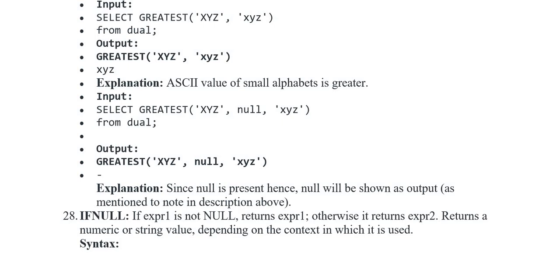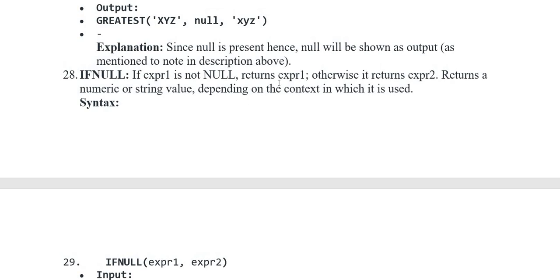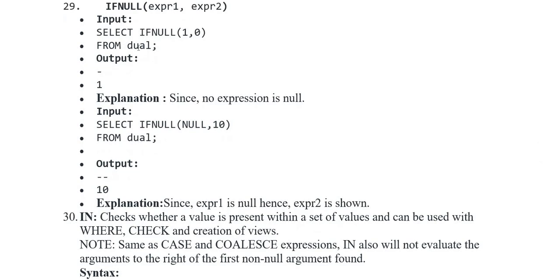Iskeba aata hai IFNULL. If expression is not null, return expression one; otherwise it returns expression two - returns a numeric or string value depend on the context in which it is used. Syntax: IFNULL(expression_one, expression_two). Input: SELECT IFNULL(1, 0) FROM dual - output once represent kia gaya, explain kia gaya, no expression is null. Input: SELECT IFNULL(null, 10) FROM dual - output represent kia gaya.